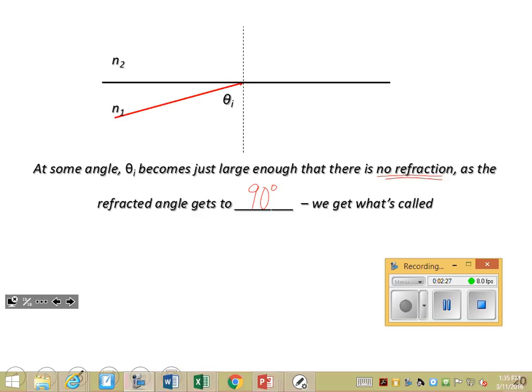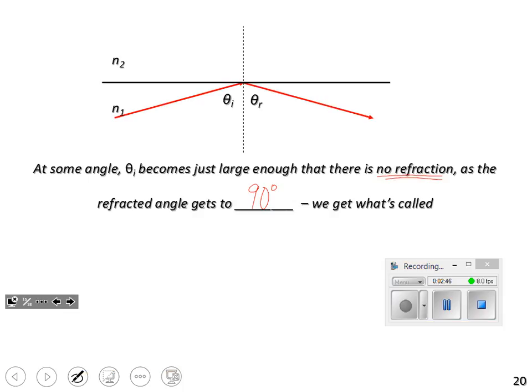As theta incident gets just bigger than that, the refracted angle gets to 90 degrees. And there actually isn't refraction because what would have been the refracted ray doesn't get into the other substance.